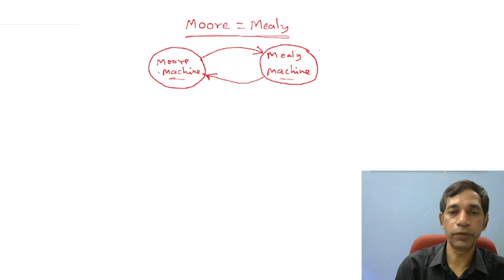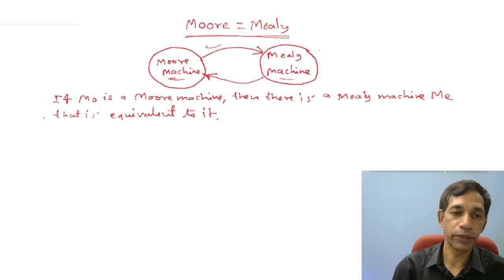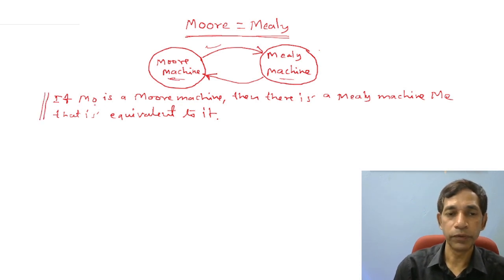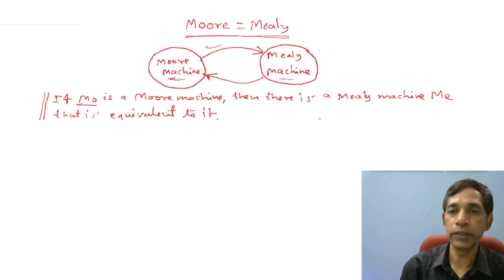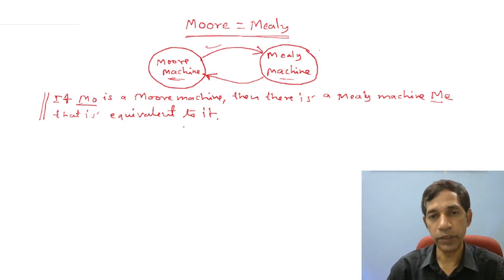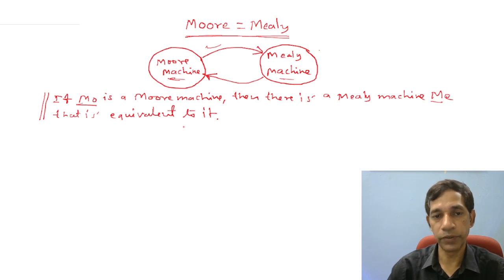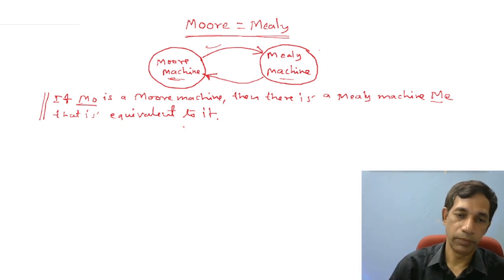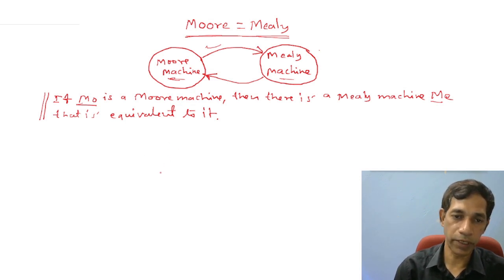We are going to convert the Moore machine to the Mealy machine. The theorem states that if M0 is a Moore machine, then there exists a Mealy machine Me that is equivalent to it. This means we can obtain the equivalent Mealy machine from any given Moore machine. The algorithm is straightforward: in the Moore machine, if we are in some state q, that state produces some output, say t.